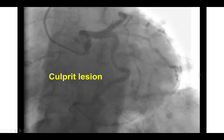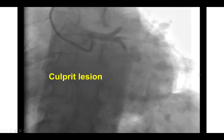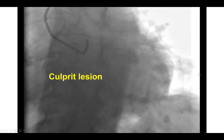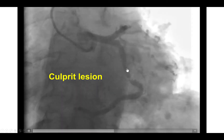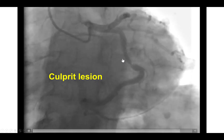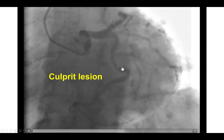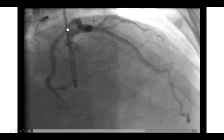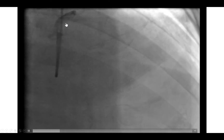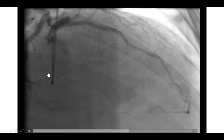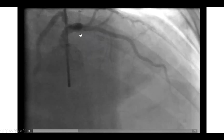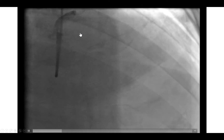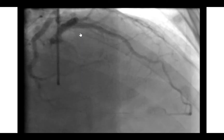We returned back to the left coronary artery and performed repeat injections, this time in additional projections. In the spider view, we do see a significant ulcerated hazy lesion in the proximal circumflex, which was also seen in an apicranial view. There was the culprit, and that makes sense because the patient does have a left dominant system, something that is sometimes easy to dismiss during the urgency to recanalize in primary PCI.